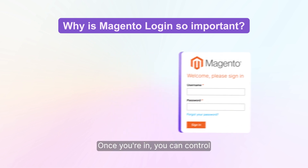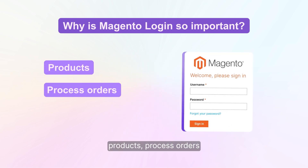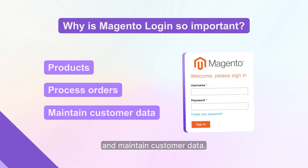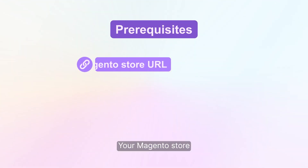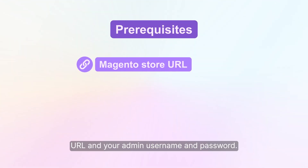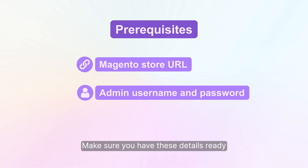Once you're in, you can control products, process orders, and maintain customer data. Before you start, you need a couple of things: your Magento store URL and your admin username and password. Make sure you have these details ready and we can begin.